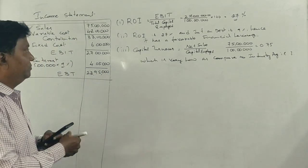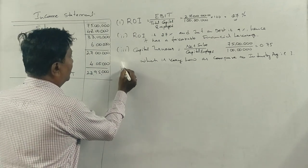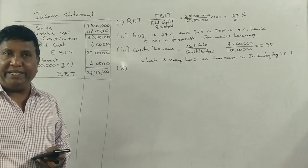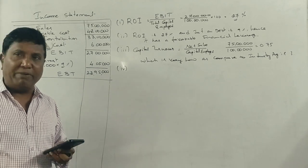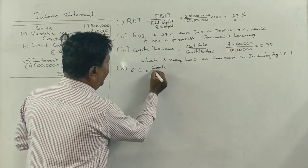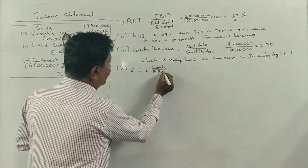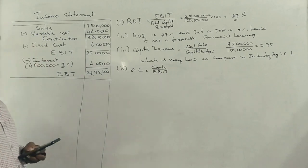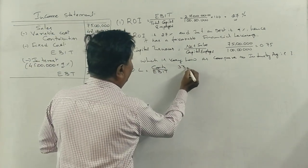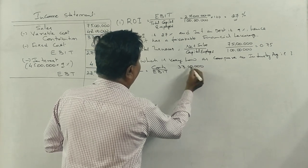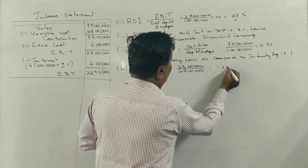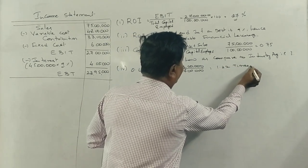Now for operating leverage, financial leverage, and combined leverage. The operating leverage formula is contribution divided by EBIT. Contribution is ₹33 lakhs and EBIT is ₹27 lakhs, giving operating leverage of 1.22 times.